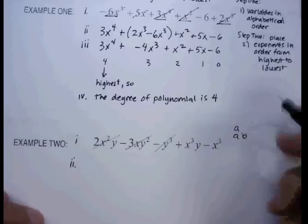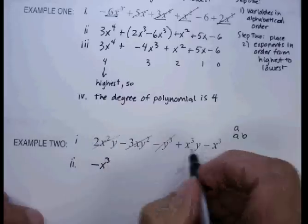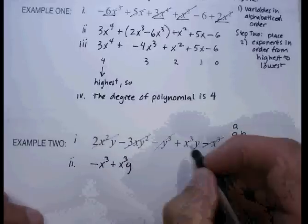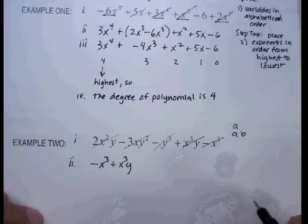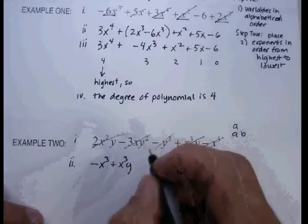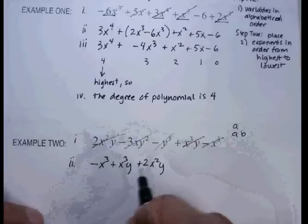Again, just think of a phone book. So I'm going to say negative x cubed. Cross that out. Plus x cubed y. Cross that one out. Let's go to the x squared now. There it is right there. Plus 2x squared y.